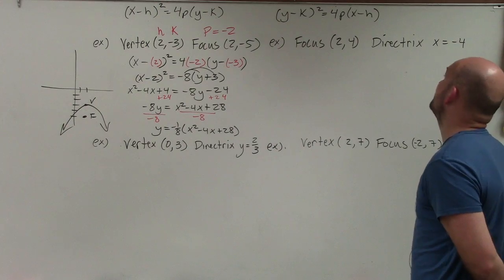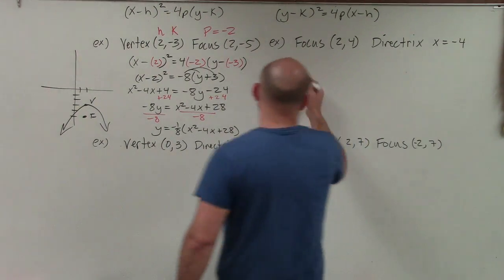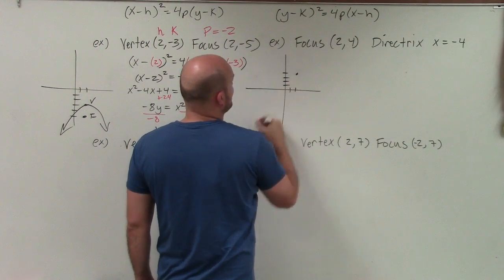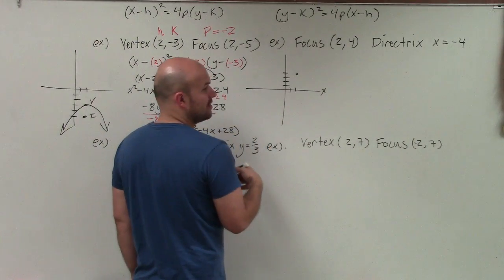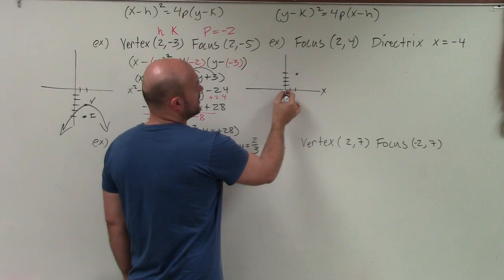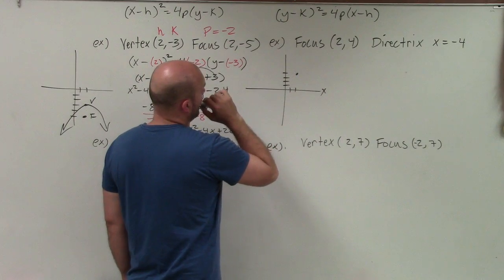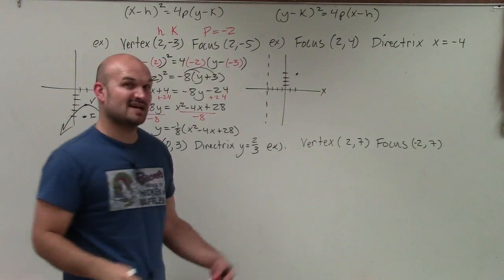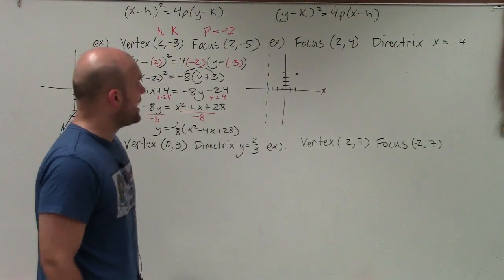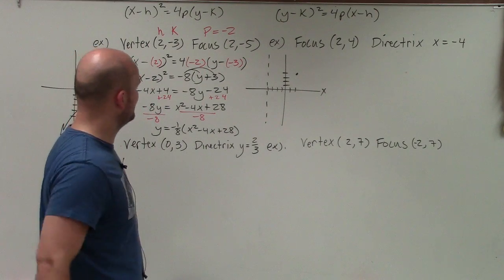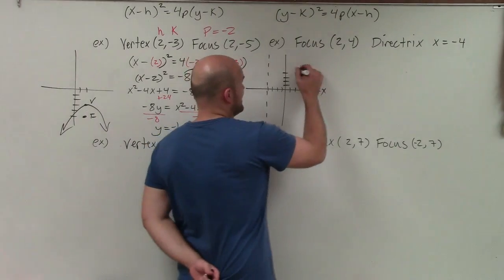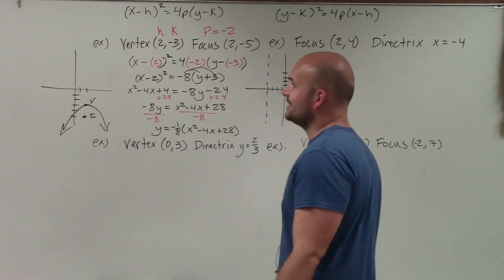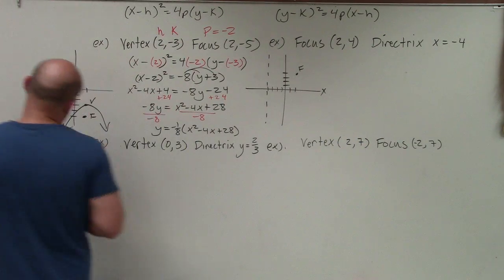In the next example, we have focus at (2, 4) and directrix x = −4. Again, the first thing to do is plot the information. I plot the focus at (2, 4), and the directrix x = −4 is a vertical line. Here's my directrix and here's my focus — but I'm not given my vertex, so I need to find it.